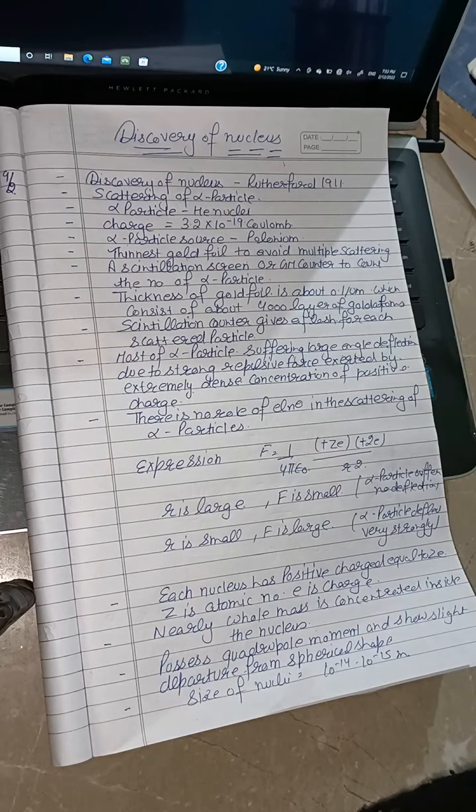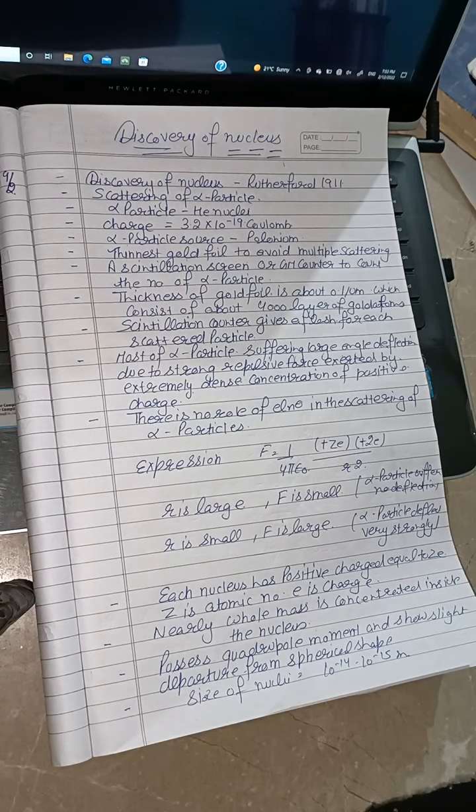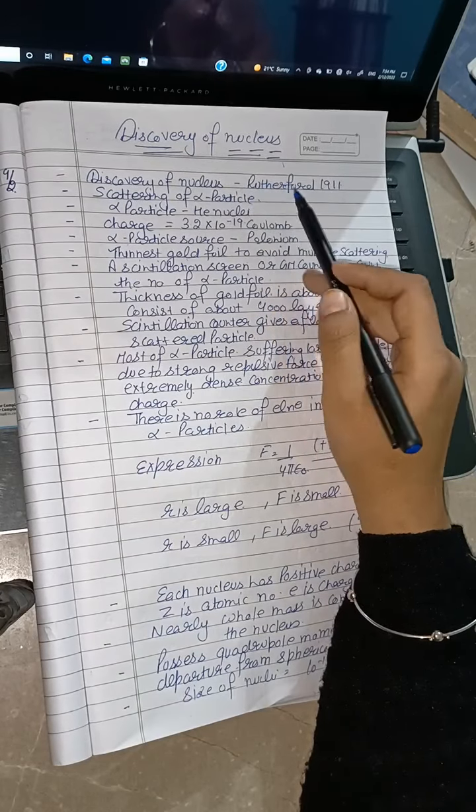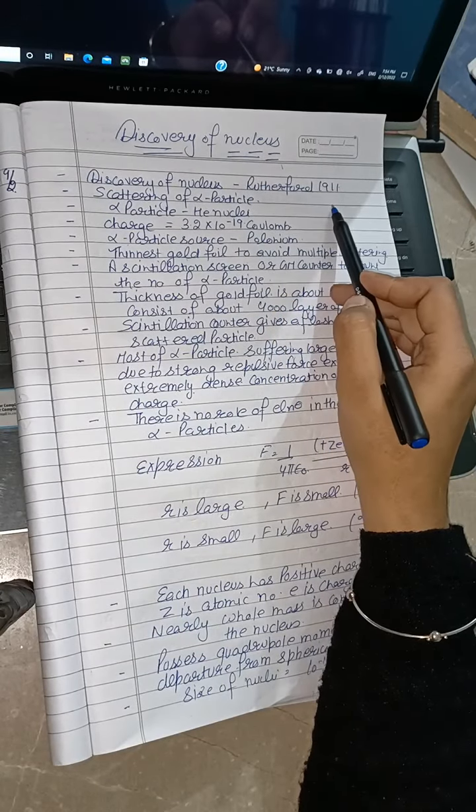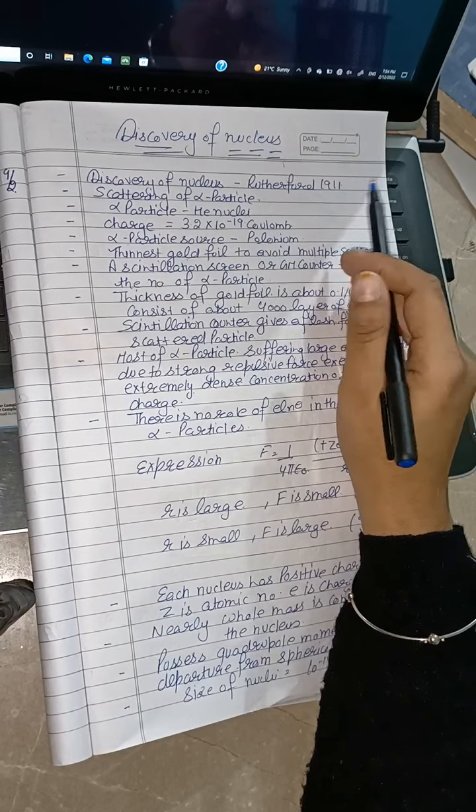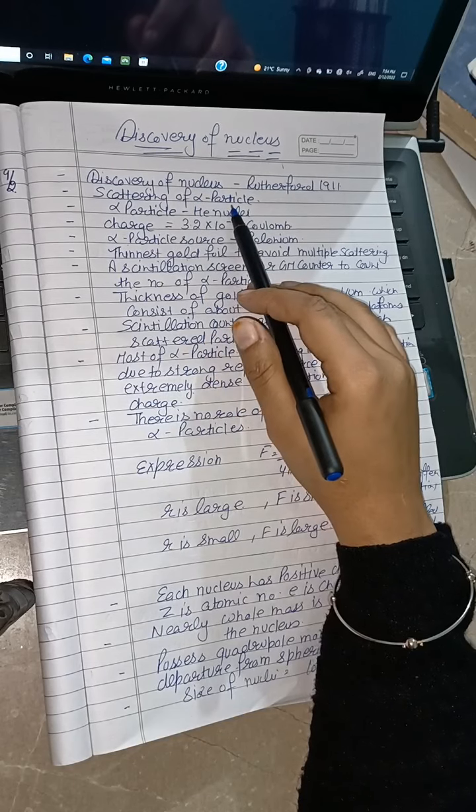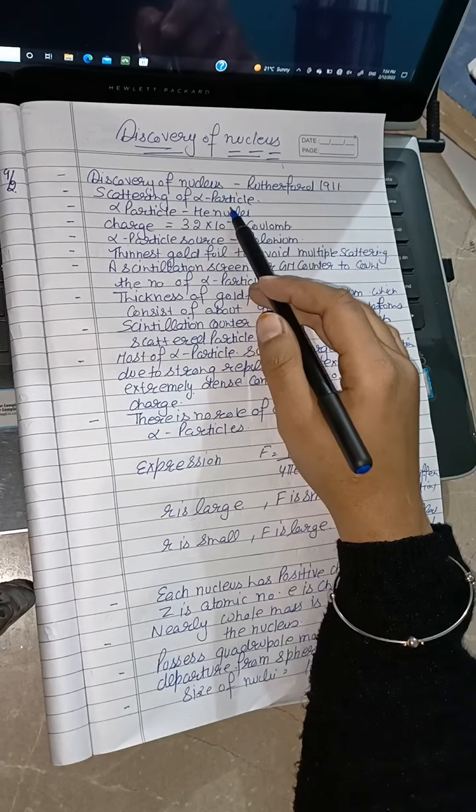Good evening everyone. Today we are going to discuss the discovery of nucleus. Rutherford discovered the nucleus in 1911 through his experimental observation of the scattering of alpha particles.